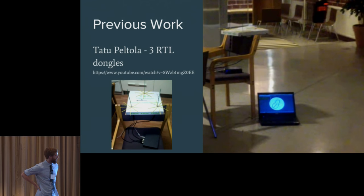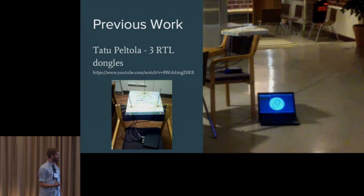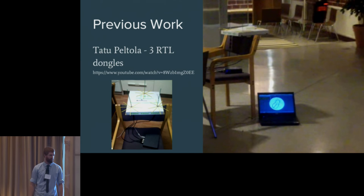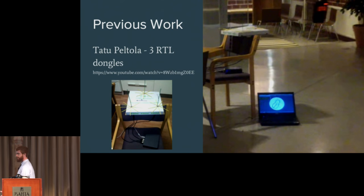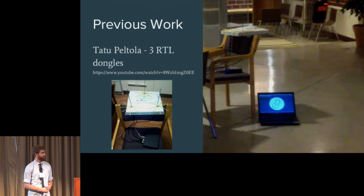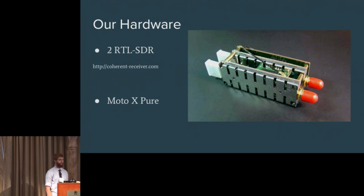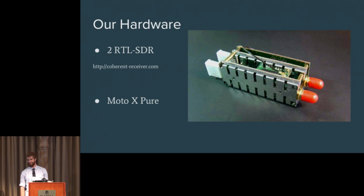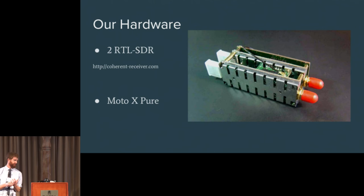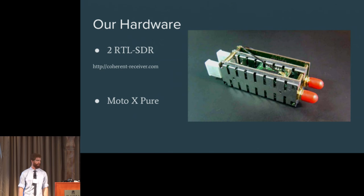As we looked into hardware options, a lot of people were using these RTL dongles because they were really cheap, and a lot of people wanted them to be coherent, synchronized. That required, in many cases, people to have a single clock driving both receivers. Right as we were about to get started, we saw an article for coherentreceiver.com that pretty much did the same thing but far better than we could have done it. The picture here is two RTL dongles running off of a single clock. It's a really nice setup. Here's just a two-channel receiver based off those RTL dongles.